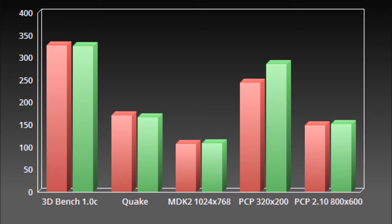In 3DBench 1C — a DOS benchmark — the results are virtually identical. Same with Quake, also done in DOS: virtually identical, though the Athlon pulls slightly ahead. MDK2 at 1024x768: again virtually identical. PCP Bench at 320x200: the Tualatin pulls ahead noticeably. And PCP Bench 2.10 at 800x600: virtually identical, with the Tualatin pulling ahead by a very slight amount.